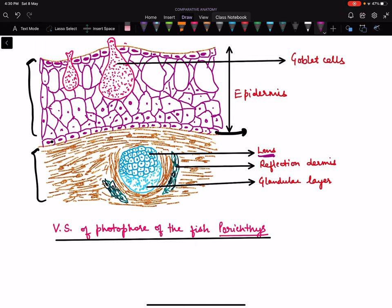It is known as lens because the cytoplasm becomes transparent. The lower portion is known as the glandular layer, and on all its sides it is surrounded by reflective dermis.